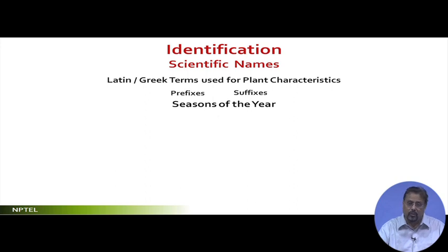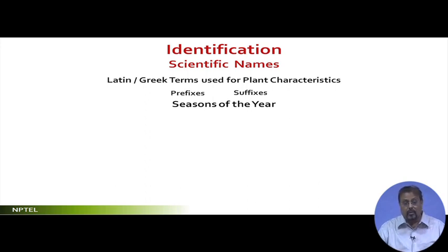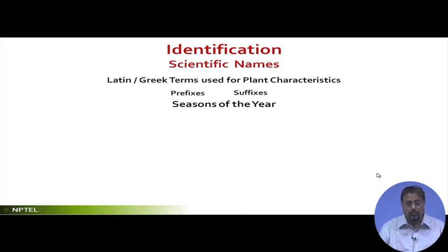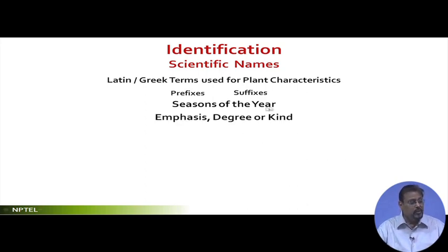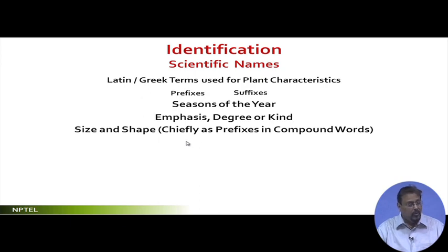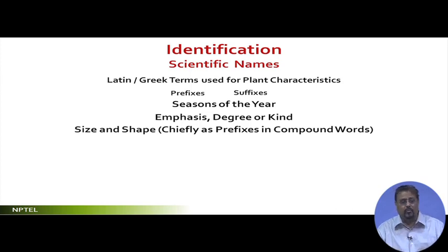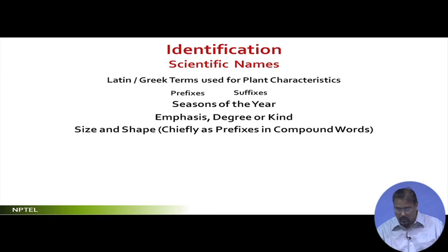The attributes of scientific names are Latin or Greek terms used for plant characteristics. They may be used as a prefix or as a suffix, and may represent seasons of the year, size and shape, regions or habitats, and so on. The second part of the name may represent seasons of the year, and there must be a unique name — the genus and the epithet together form a unique combination.